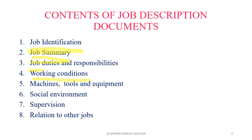Fourth is working conditions. This includes the physical environment of the job, risks in the workplace, possibilities of their occurrence, and so on. Fifth is machines, tools, and equipment — the names and types of major machines and tools used on the job are described here.